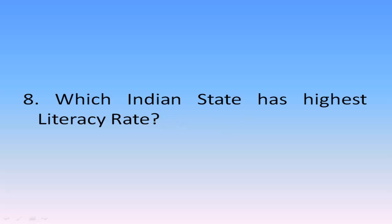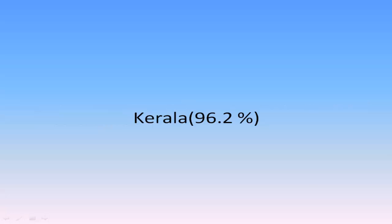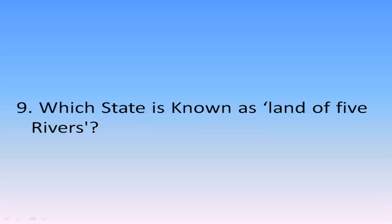Which Indian state has the highest literacy rate? Kerala, with a 96.2% literacy rate. Which state is known as the Land of Five Rivers? Punjab.